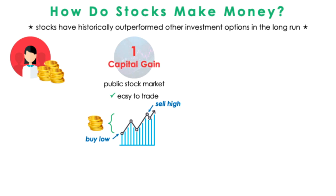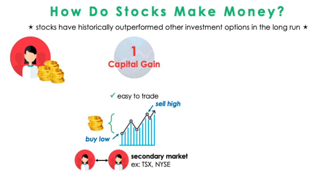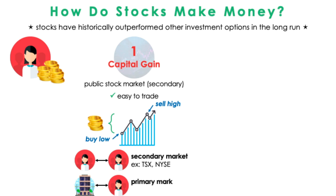Note that when investors sell already issued shares to other investors, this is called the secondary market. The Toronto Stock Exchange and the New York Stock Exchange are considered to be secondary markets. On the other hand, primary markets are when companies issue a new batch of shares to investors — so these shares are being traded for the first time. In primary markets, the company issuing the new batch of shares earns the proceeds, the share price times the quantity sold, from the issuing.